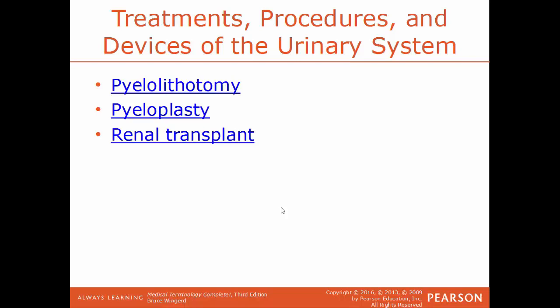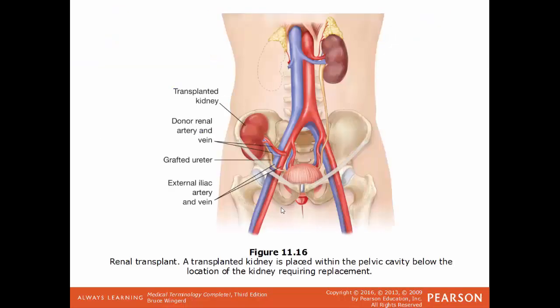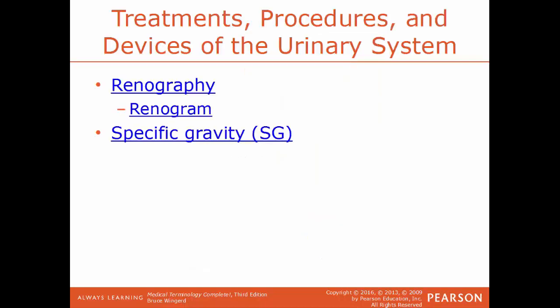Pyeloplasty is the surgical repair of the renal pelvis. Renal transplant is the transplanting of a functioning kidney into a patient who is at end stage renal disease — you cannot live without at least one functioning kidney. In this image, when a kidney is transplanted into a recipient, it's not put into the same location the diseased one was taken from; the transplanted kidney is actually placed in the pelvis.